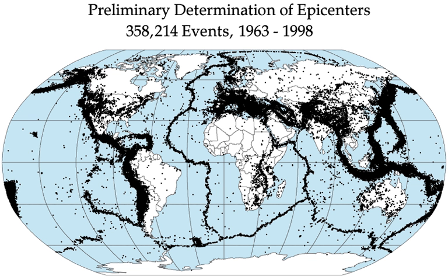When the epicenter of a large earthquake is located offshore, the seabed may be displaced sufficiently to cause a tsunami. Earthquakes can also trigger landslides and occasionally volcanic activity. In its most general sense, the word earthquake is used to describe any seismic event, whether natural or caused by humans, that generates seismic waves.